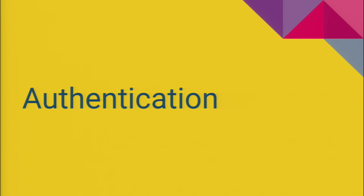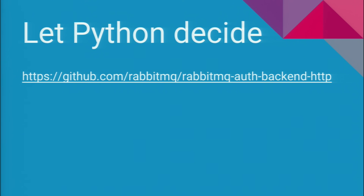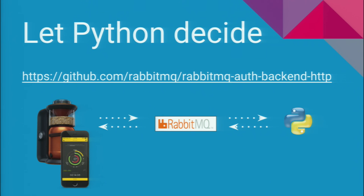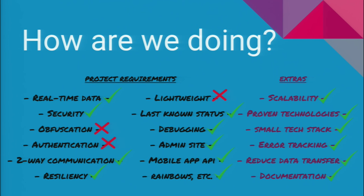Let's solve authentication in Python. There is a really nice RabbitMQ authentication backend plugin via HTTP. What this means is: when the machine wants to connect to the broker, instead of the broker just deciding yes or no, it passes that information to Python. Python checks the database and says whether that machine can actually connect or not. So we don't need to have all that in the broker — it can be in our normal database. And remember, it's a long-lived TCP connection — just once. This works for devices as well.